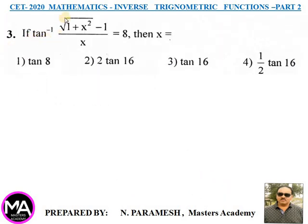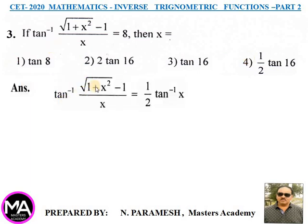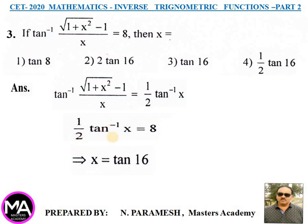Question 3: If tan⁻¹[(√(1+x²)−1)/x] = θ, find x. Answer: tan⁻¹[(√(1+x²)−1)/x] = (1/2)tan⁻¹x. So (1/2)tan⁻¹x = θ, meaning tan⁻¹x = 2θ, therefore x = tan(2θ). That is in option 3; option 3 is correct.